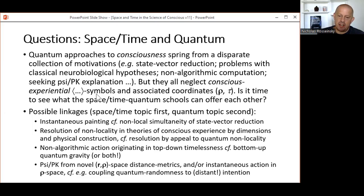So is it time to see what the space-time schools and the quantum schools can offer to each other? Here are some possible linkages or conversation topics, where I've put the space-time viewpoint first before the CF, and a quantum perspective on perhaps the same issue second. We have instantaneous painting compared with non-local simultaneity of state vector reduction. We have resolution of non-locality in theories of conscious experience by dimensions and physical construction compared to resolution by appeal to quantum non-locality. We have non-algorithmic action originating in top-down timelessness contrasted with, or perhaps added to, bottom-up quantum gravity mechanisms. And finally, psi or PK from novel r-row space distance metrics and/or instantaneous action in row space compared with coupling quantum alleged randomness to a distant intention.